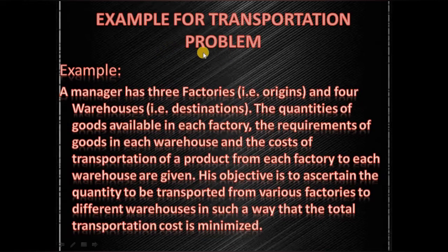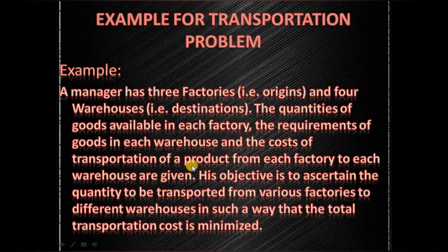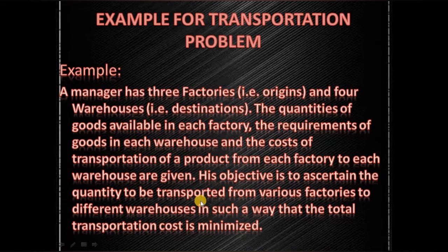Let me show you an example of how transportation problem is applicable in industry. A manager has three factories — A, B, C — which are the origins, and four warehouses — D, E, F, G — which are the destinations. The manager has information on quantities available in each factory, the requirements of each warehouse, and the cost of transportation from each factory to each warehouse. The manager's objective is to determine quantities to be transported from various factories to different warehouses in such a way that total transportation cost is minimized. Transportation problem helps the manager accomplish this.